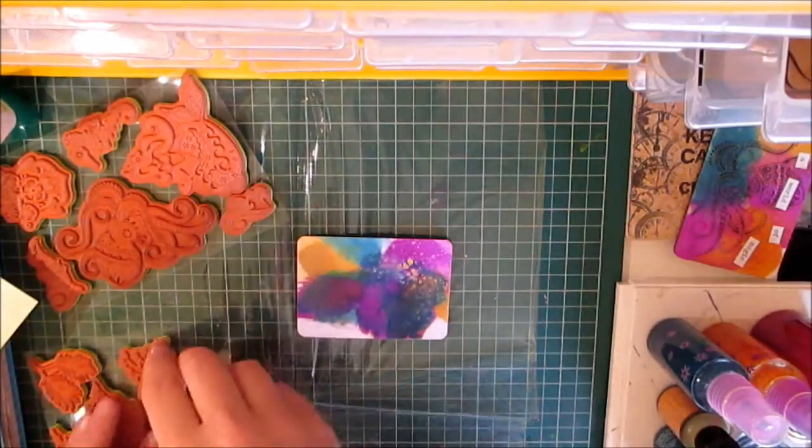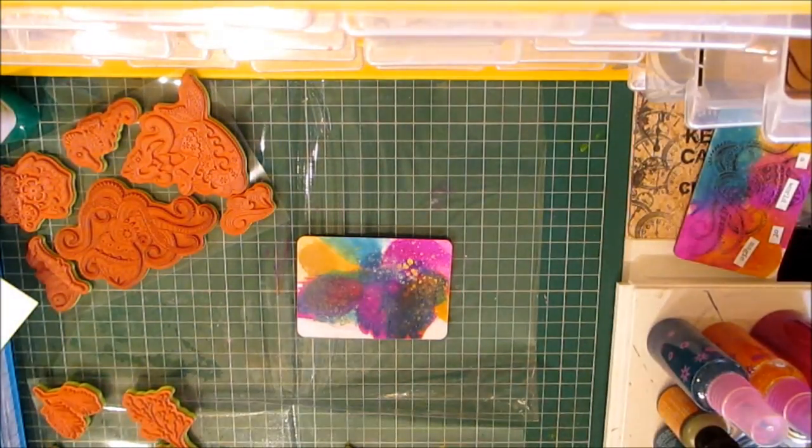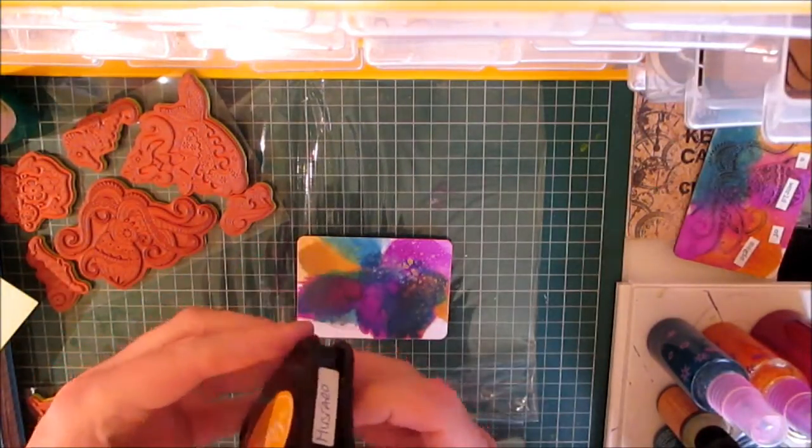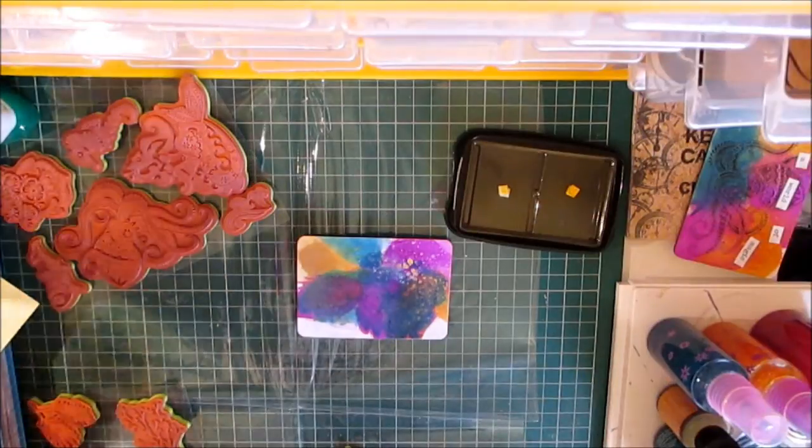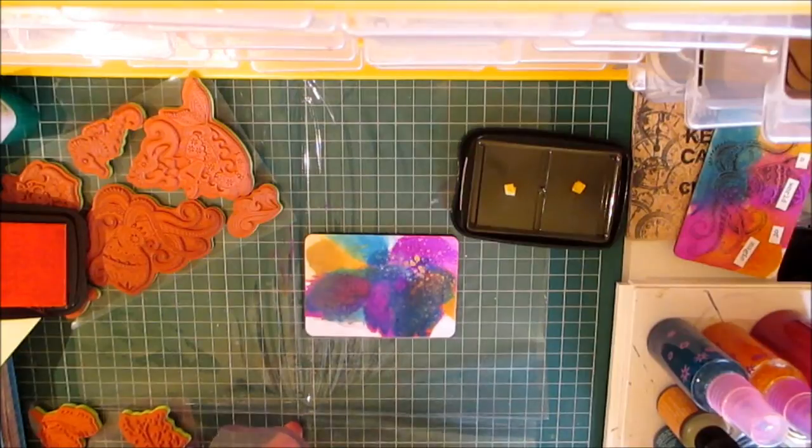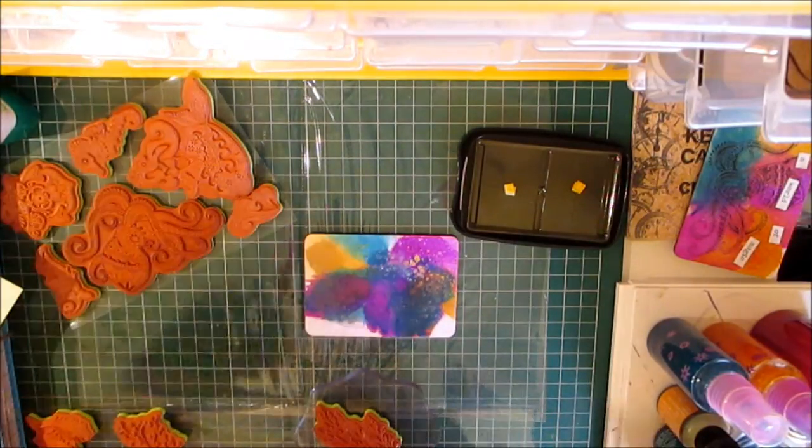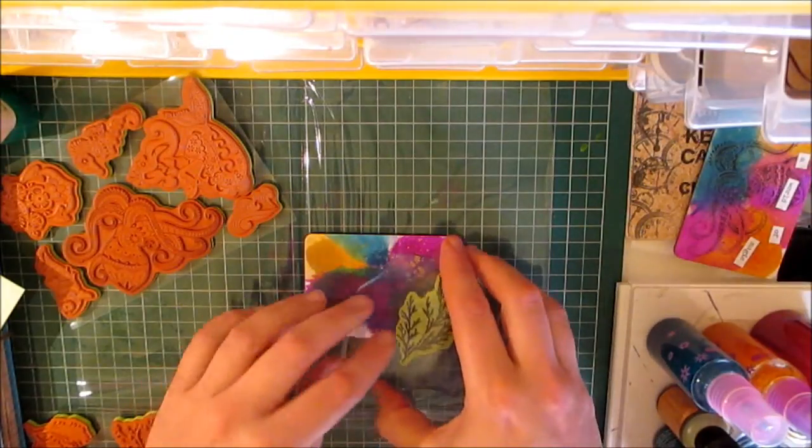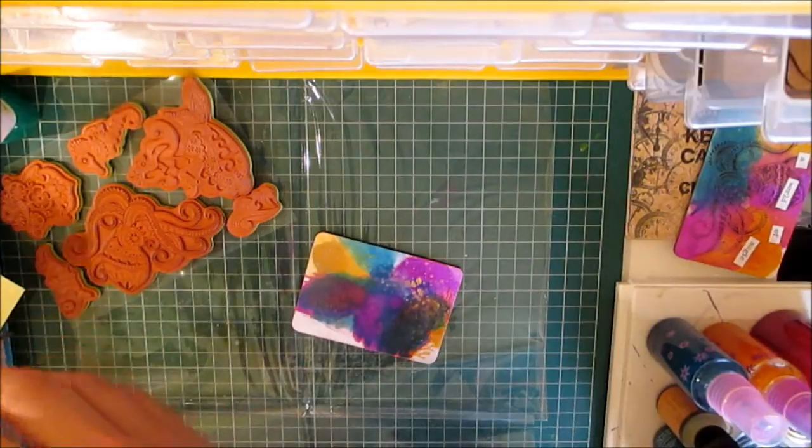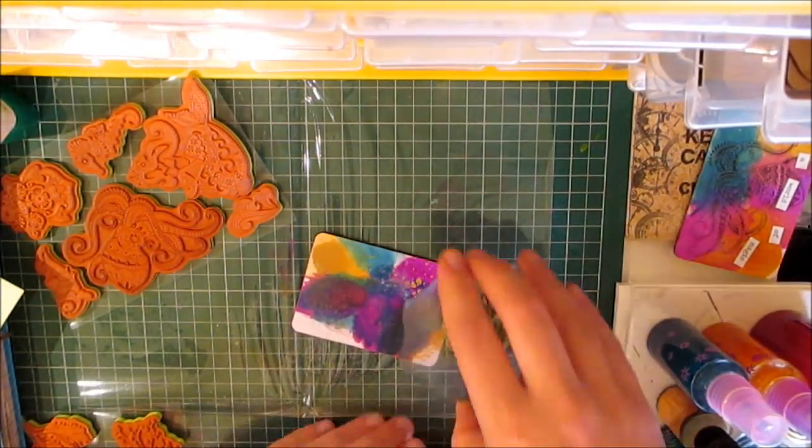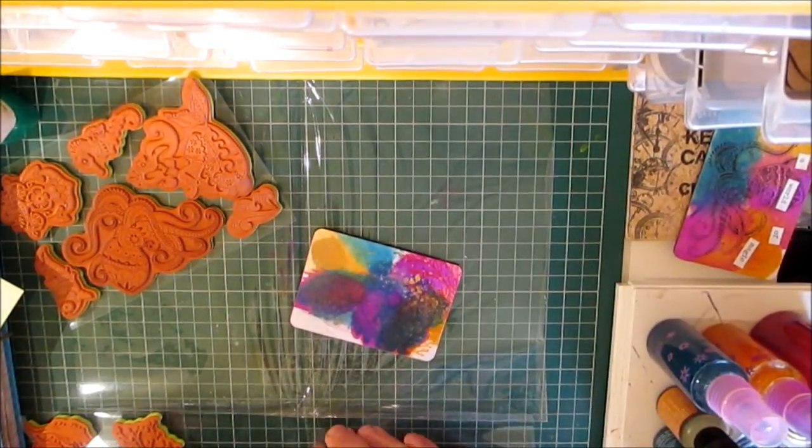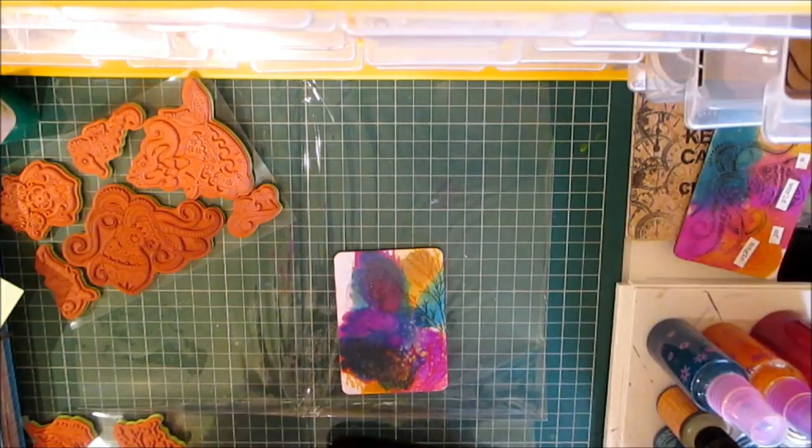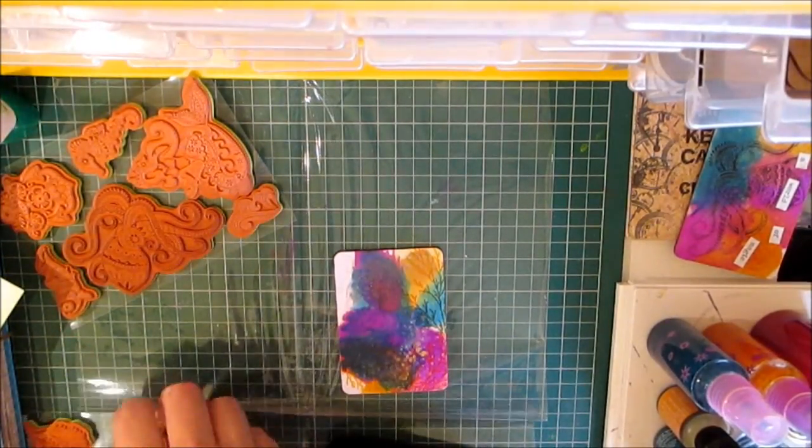And I'm going to put a bit of, using my inks, and I'm going to use the mustard stays on. Oops, where's my, it's not on the ink block yet Gareth. That's it, put it on the ink block. That helps. And I'm going to use this round the edge. Now I don't want this to be the center piece. I want the background to be the piece that stands out. So I'm not too bothered that it's not a vibrant stamp.